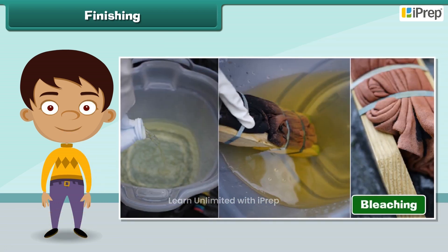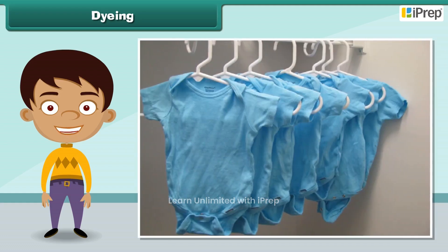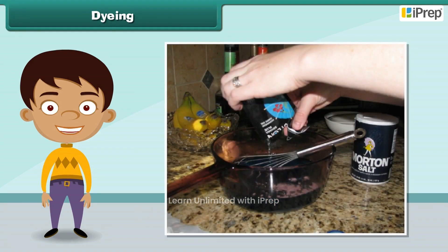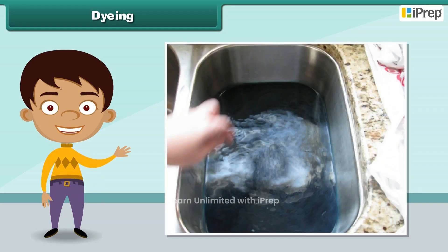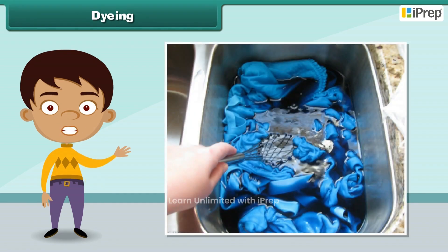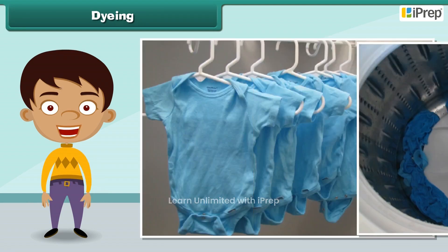Bleaching removes the natural color of raw fabric. Dyeing a fabric means giving a new color to the fabric. To dye a fabric, first a solution of dye and salt in warm water is prepared. Next, the fabric is dipped in the solution. Then the fabric is removed after an hour and washed. Finally, the fabric is dried.